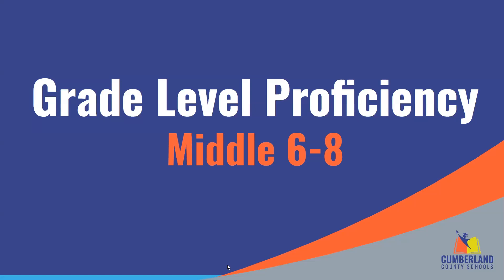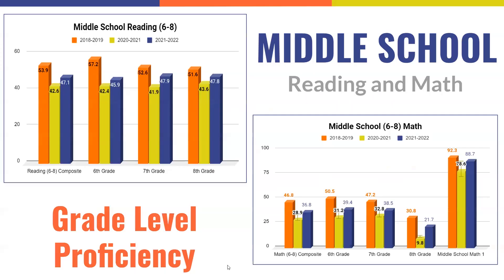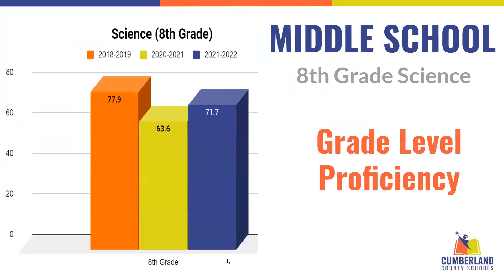Shifting our attention to middle schools, the gains are very similar to what was shown in our elementary schools. Reading levels increased by 4.5 percentage points, while math saw an overall increase of 7.9 percentage points. The strongest jump in proficiency came in eighth grade math, whose gain was 11.9 percentage points. Science also saw a gain of 8.1 percentage points.